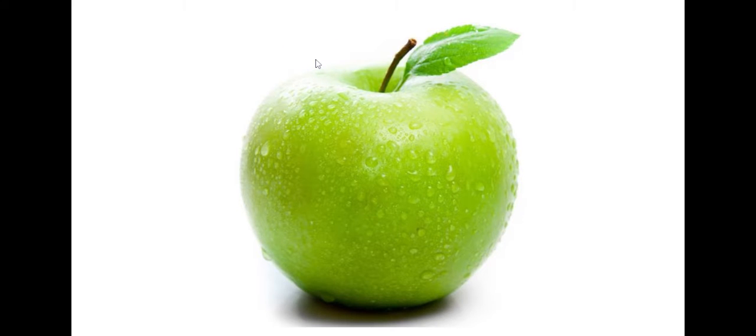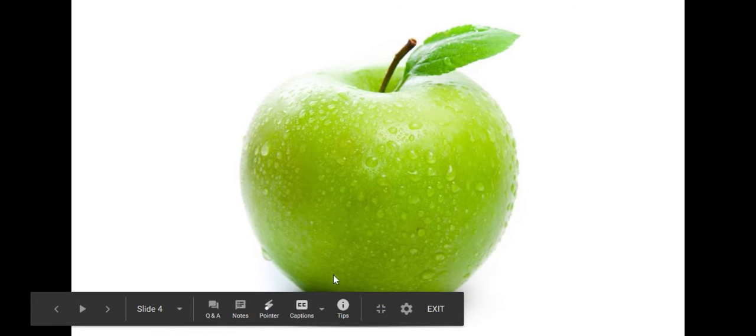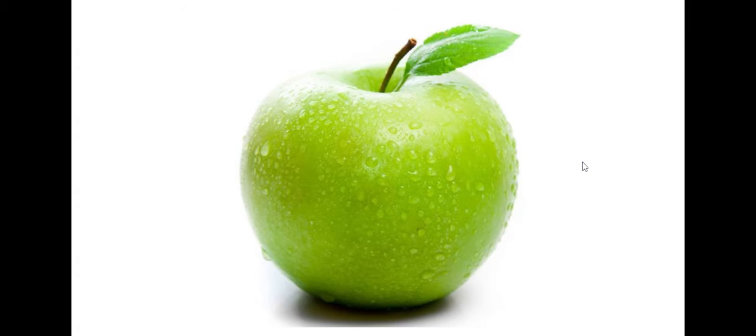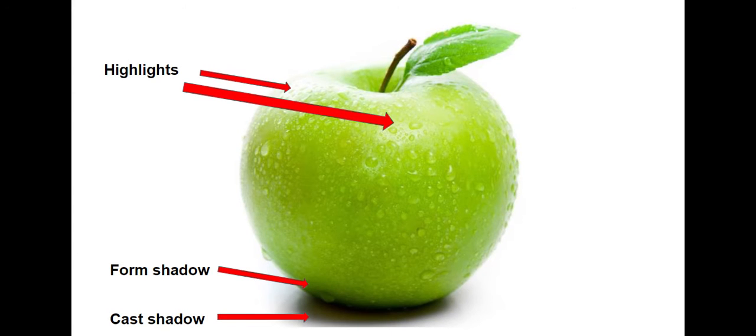The form shadow is the part of the object itself that's furthest away from the light, and it's the darkest part of the object. The form shadow is down at the bottom. And finally, the cast shadow is created by the object blocking the light and making the shadow on the ground underneath it.